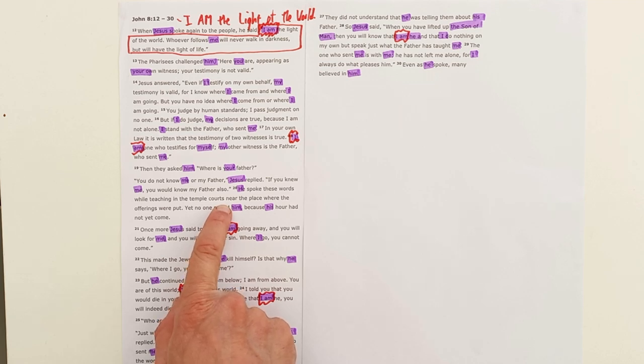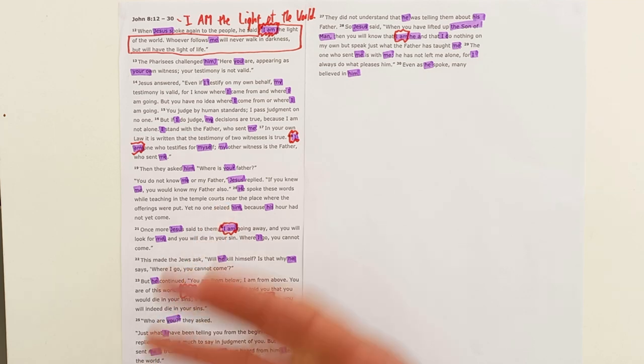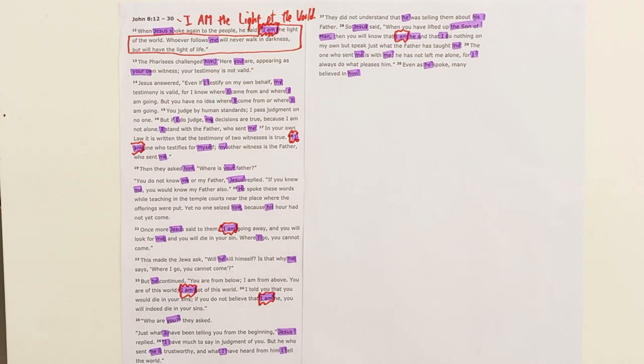Chapter 7 ended with Jesus saying 'anyone who is thirsty come to me and drink,' and at this festival the water pouring ceremony would have just taken place.